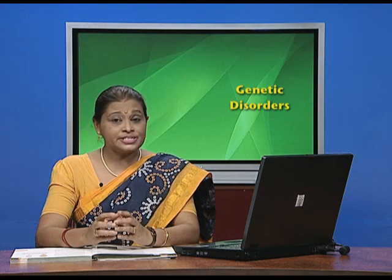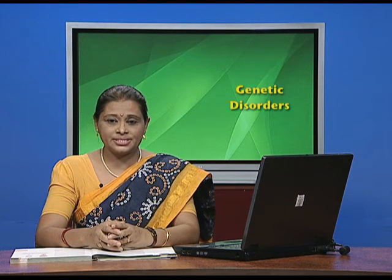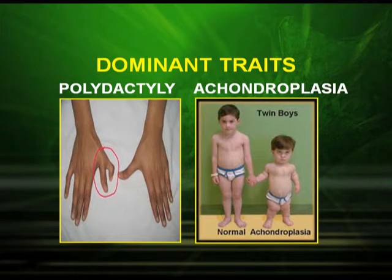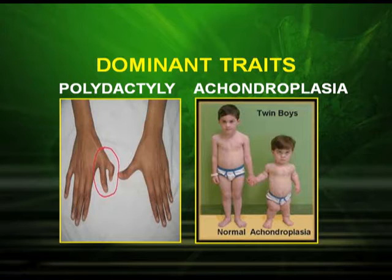Now we have some examples of autosomal dominant disorders. One is polydactyly — you must have seen a person having more than five fingers, as the picture shows. Another important one is achondroplasia. In this, you can see twin boys — one is normal and the other, although they are twins, is suffering from achondroplasia, which is the shortening of the normal bones.